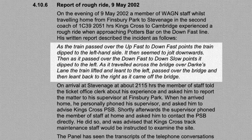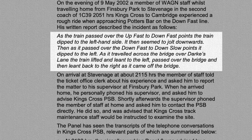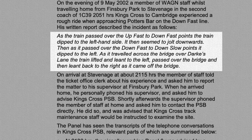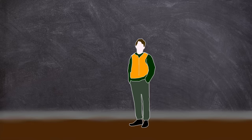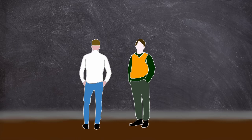actually, I'll tell you in the person's own words as written in page 61 of the RSSB final report. The train dipped to the left-hand side. It then seemed to jolt downwards. Then, as it passed over the down-fast to down-slow points, it dipped to the left. As it travelled across the bridge over Darks Lane, the train lifted and leant to the left, passed over the bridge and then leant back to the right as it came off the bridge. When the staff member got to Stevenage, he reported the rough ride.